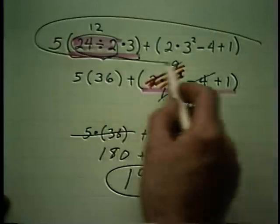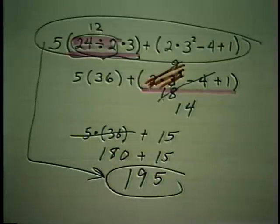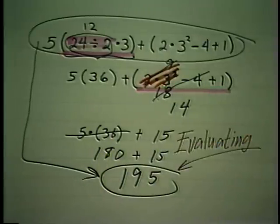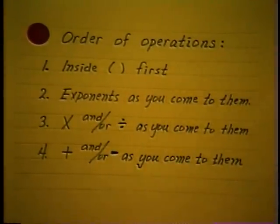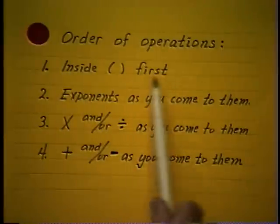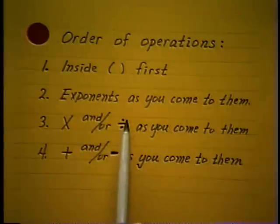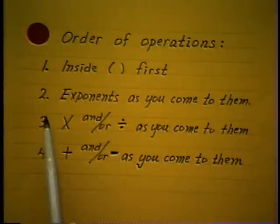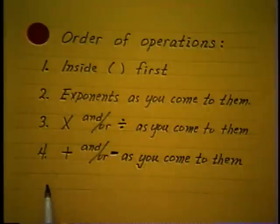This process of reducing an arithmetic expression to a single number we call evaluating. These order of operations must be memorized as soon as possible — at least by the end of your current lesson. So first you always do what's inside parentheses as you come to it. Exponents next as you come to them. Multiplications and/or divisions as you come to them — don't do additions/subtractions until you finish those. And then back to the beginning: additions and/or subtractions as you come to them. A very important lesson — learn it very soon.